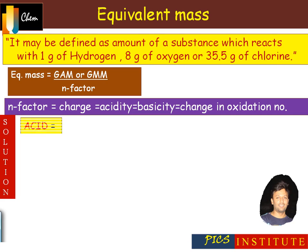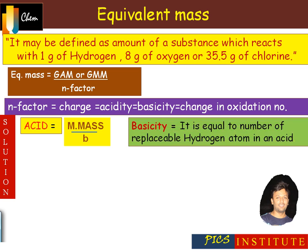First of all, the equivalent mass of an acid. It is equal to molecular mass divided by basicity. Basicity is equal to the number of replaceable hydrogen atoms in one molecule of the acid.